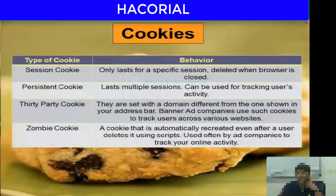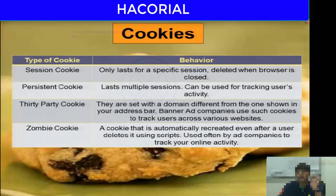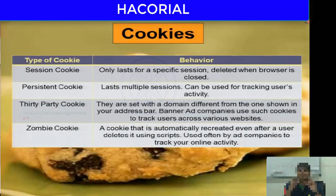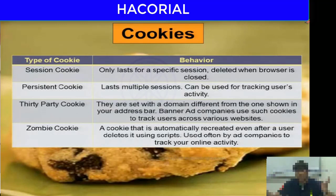A persistent cookie, on the other hand, will last for multiple sessions. Even if you close your browser, shut down or restart your machine, the persistent cookie remains on your computer. To remove it, you either manually delete it or it expires automatically — most websites set an expiry date of one month, two months, or even longer.